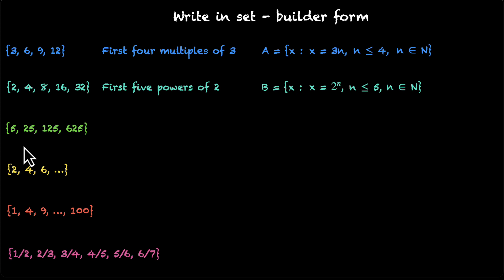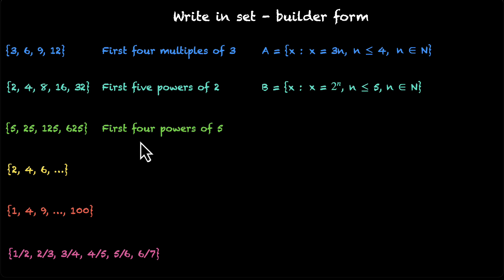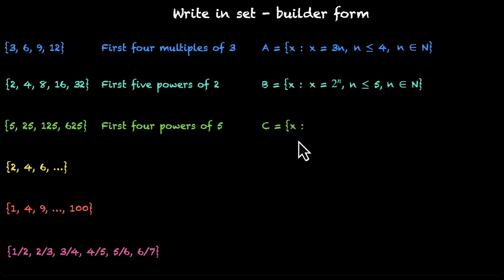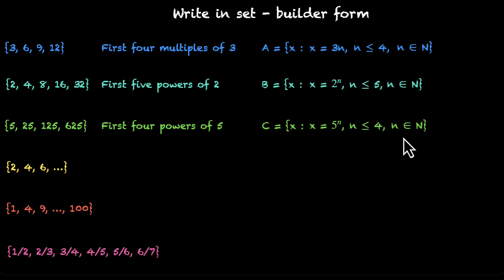The next one: we have 5, 25, 125, and 625. These are the first 4 powers of 5. It's very similar to the previous one — we are looking for x such that x equals 5 to the power n, where n is less than or equal to 4 and n belongs to natural numbers.